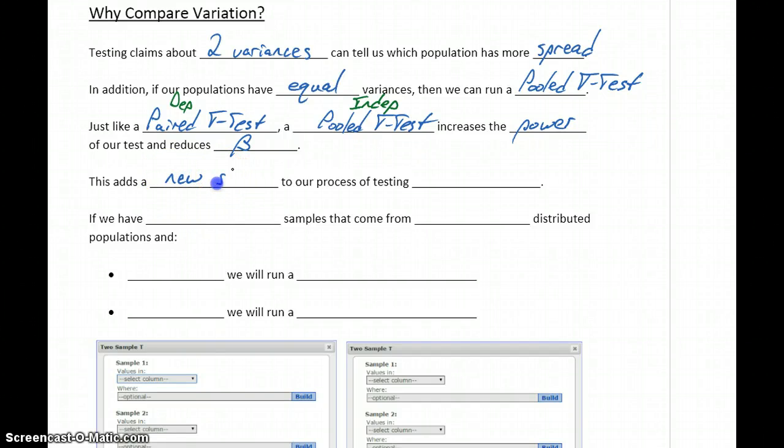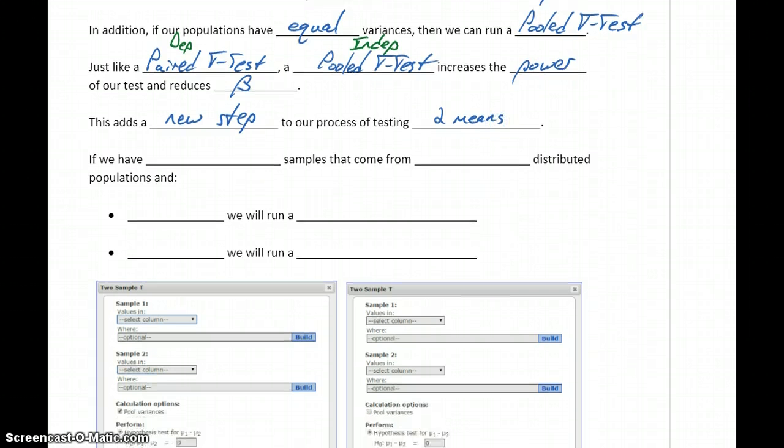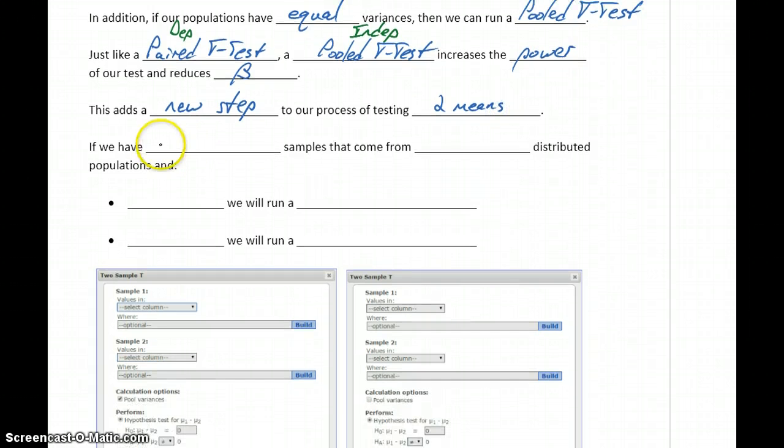What this means practically is that we have a new step to take into account any time we test a claim about two means. If we have independent samples that come from normally distributed populations and we can conclude that our two population variances are equal, then we'll run a pooled t-test.